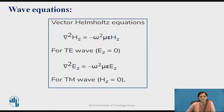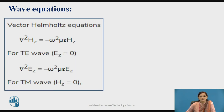Now you know the different Helmholtz equations. The Helmholtz equation can be defined for TE wave as well as the TM wave. For the TE wave, Ez equals zero; therefore del-squared Hz equals minus omega-squared mu epsilon Hz. The second equation is del-squared Ez. In the Helmholtz equation, the del operator represents partial differentiation with respect to the axes. If wave propagation is considered in rectangular coordinate axes, the partial differentiation is with respect to x, y, and z.